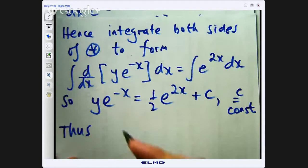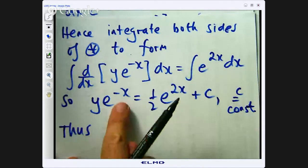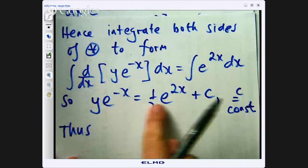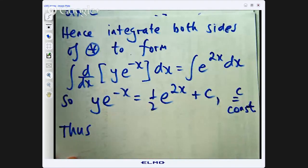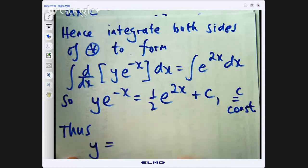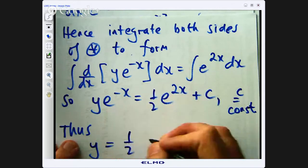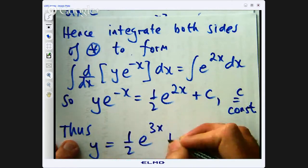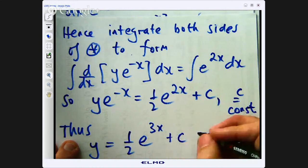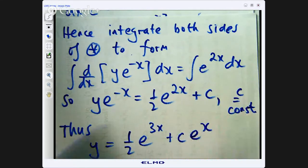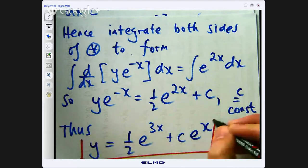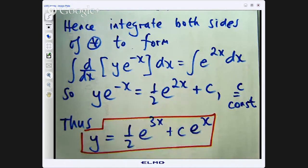So now let us rearrange this and make y the subject. Thus, we are almost finished now, so let us divide both sides by e to the negative x which is the same as multiplying by e to the x. So I multiply both sides by e to the x, I will get this plus c e to the x.